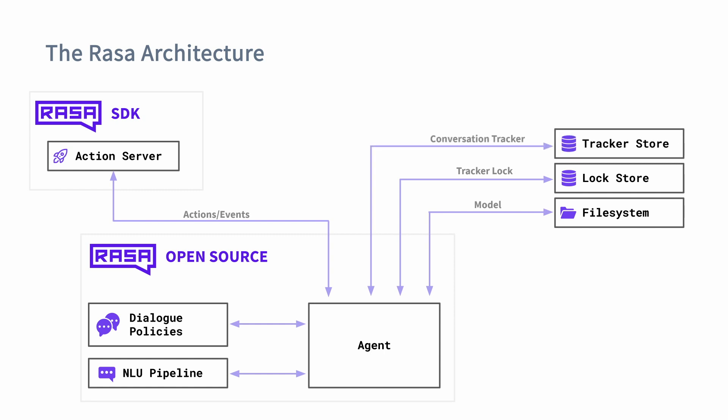Besides the lock store, we will also need to have a tracker store. The idea is that this is where the assistant's conversations will be stored. When you're running locally, an in-memory store will be used, but in a production setting, you would use a database to keep track of the entire conversation with all of your users. Rasa allows you to use Postgres, Redis, MongoDB, and DynamoDB, but you're also free to write your own connector if you prefer to use any other database.